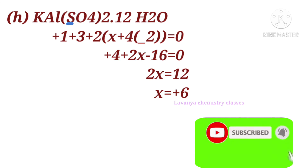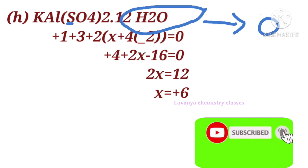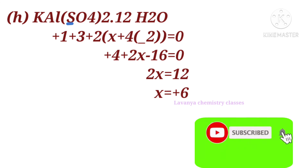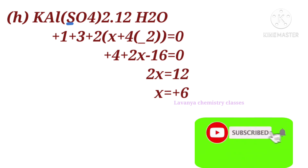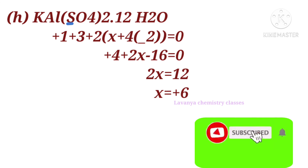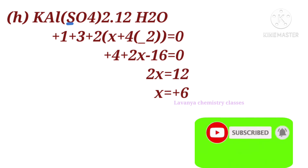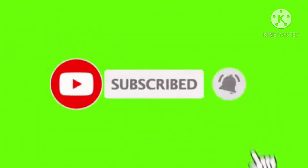The next problem is KAl(SO₄)₂·12H₂O (alum). The H₂O is neutral, so 12×(0) = 0. Potassium has +1 and aluminum has +3 oxidation state. To find sulfur: 2×(+x) + 4×(−2) = 0 per sulfate, giving +4 + 2x − 16 = 0, so 2x = 12 and x = +6. The sulfur atom has a +6 oxidation state. Please subscribe, share, and comment. Thank you for watching.